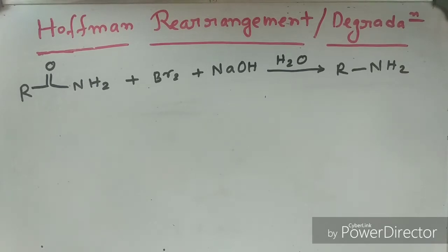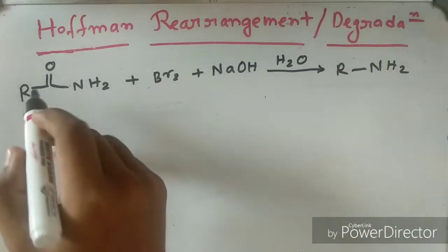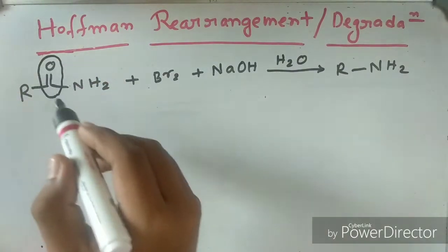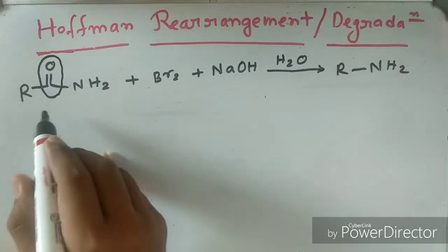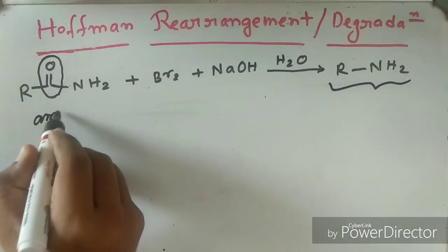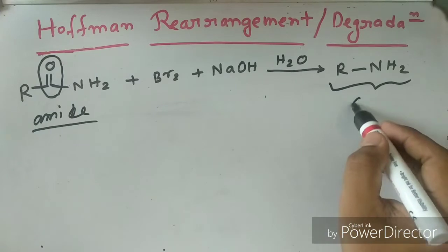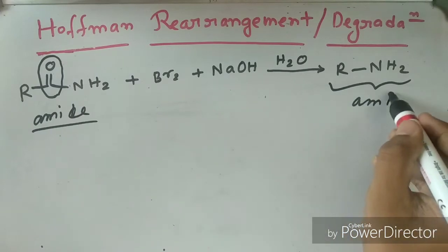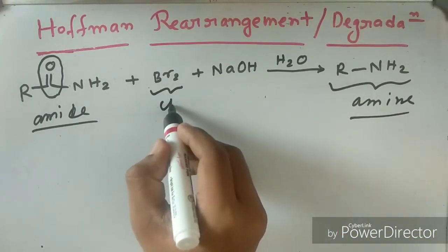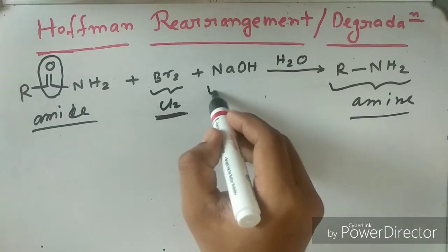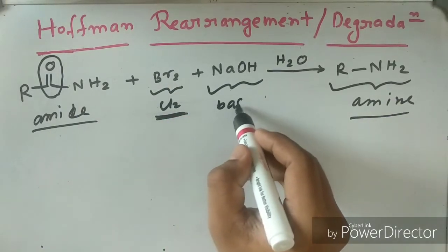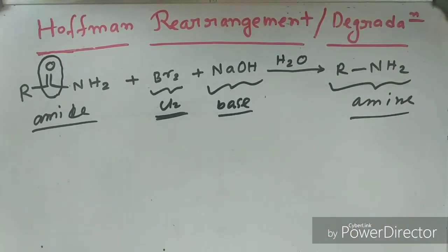Degradation means here there is a CO group, a carbonyl group, that will leave the system, up to when it gives the product that is the amine. So from amide, one amine forms.